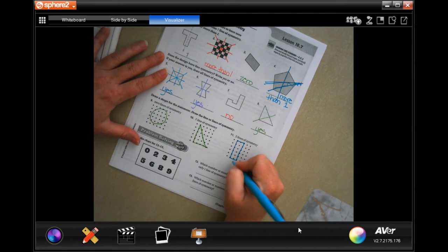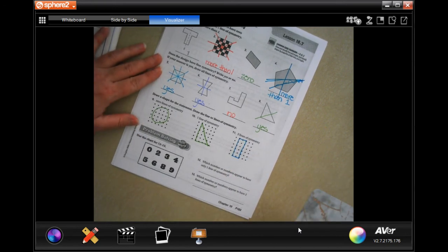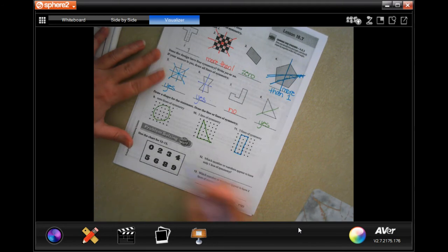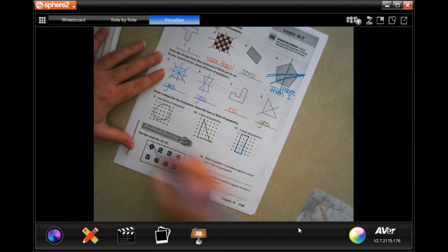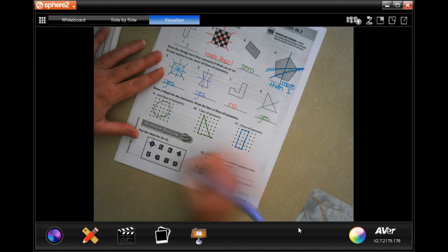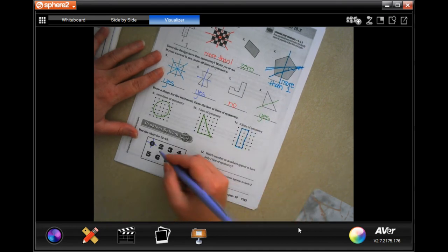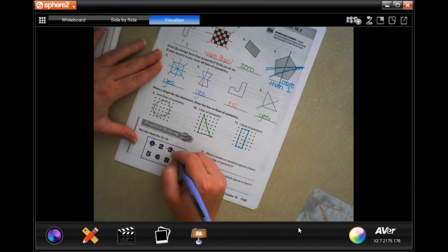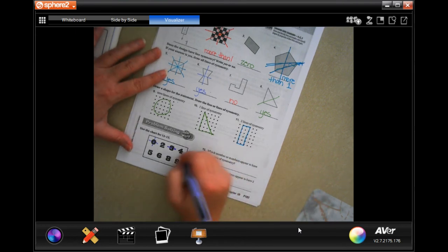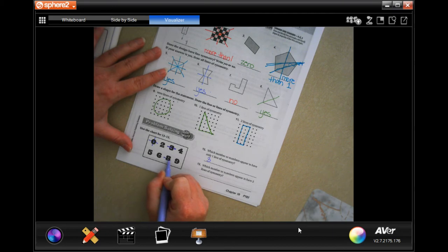We're going to use the chart. It says which number or numbers appear to have only one line of symmetry. Well, I could split this this way and this this way, so that's not only one. A two, there's no way for me to split that. It's kind of like this J shape up here. There's no way for me to split that and get a line of symmetry. Now a three, I could cut it right on the bump. That would give me a line of symmetry. There's not a good way for me to do that with four or five or six. Eight, it looks like there's two lines of symmetry, and no on nine. So it's just going to be a three.